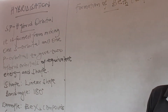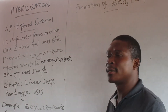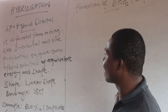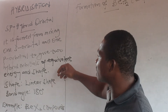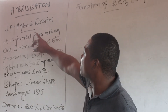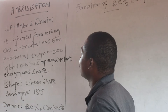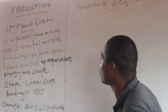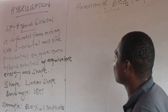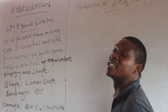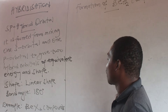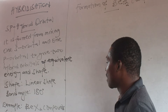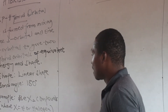So we are still on our topic called hybridization — that was sp3 and sp2. Now let me discuss sp hybrid orbitals. As usual, it is formed from mixing one s orbital and one p orbital to get two hybrid orbitals of equivalent energy and shape. The shape is linear, and the bond angle is 180 degrees.